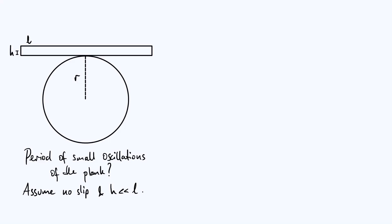Hi everyone. In this video we're going to examine the behavior of the system that I've sketched out here. This system consists of a cylinder of radius r and also a long thin plank. The plank has a length of l and a half thickness of h as marked in the diagram.